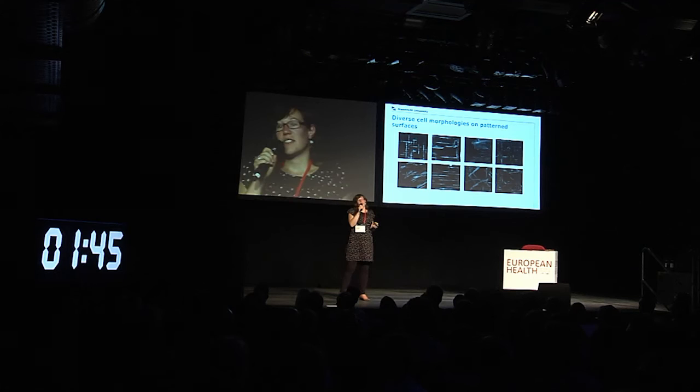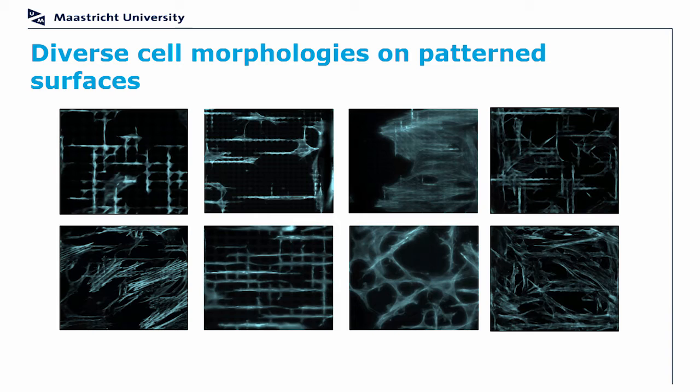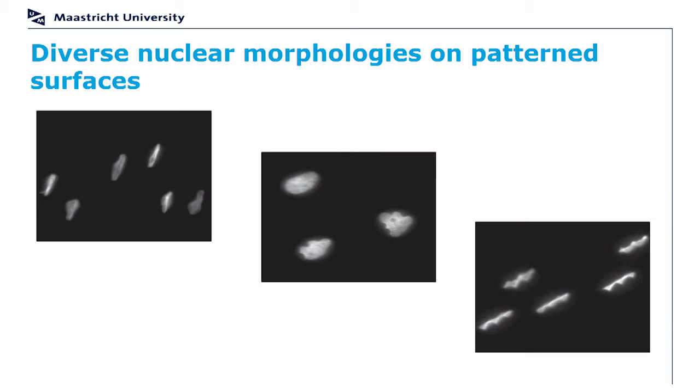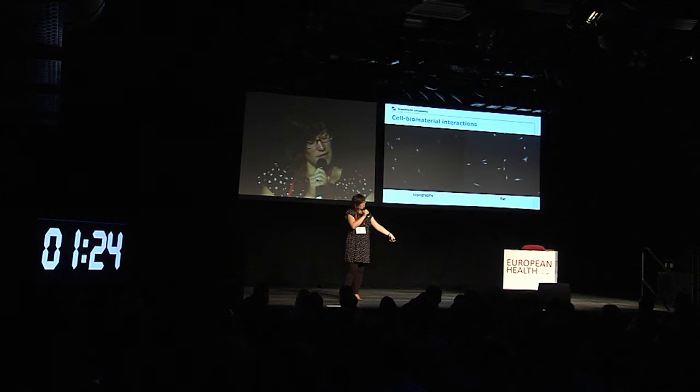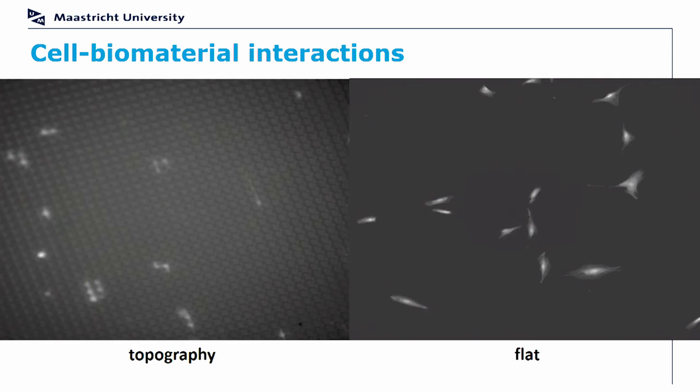What we noticed is that when we put cells on this chip, these cells have a various amount of cell morphologies, and also the nucleus can get a variety of shapes. More importantly, we can affect cell behavior — for example, cells on the right-hand side should be moving a bit, but on the topography they are moving much more. Really depending on the topography, we can induce different behaviors.